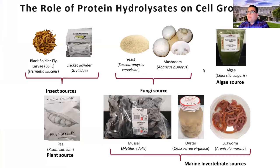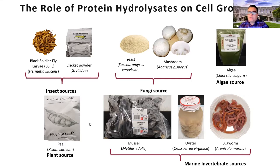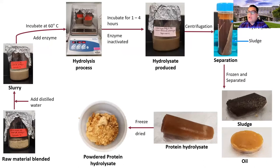Some examples of our research: we focus on different protein sources including black soldier fly, cricket powders, yeast, mushroom, different types of algae, marine invertebrates, and plant sources including pea. We use bioprocessing methods and fermentation to break them down into fractions, collect the protein part — mainly free amino acids and peptides — and apply them for cellular agriculture and cell culture. We have gotten very interesting results that we will be publishing soon.